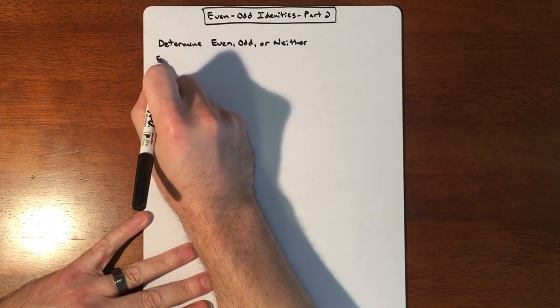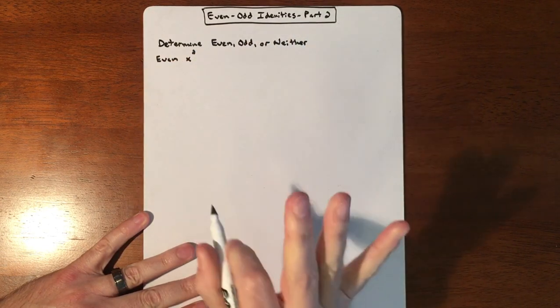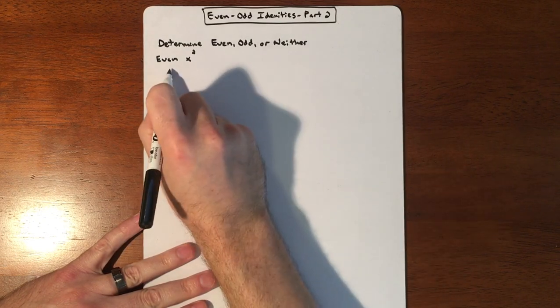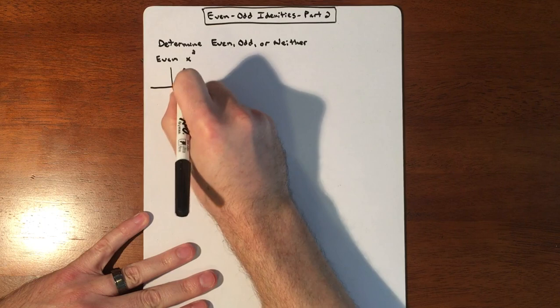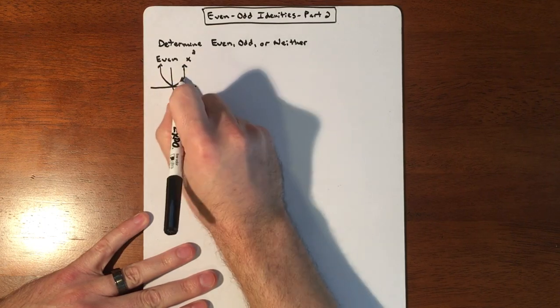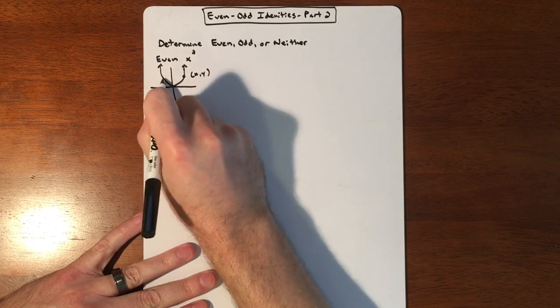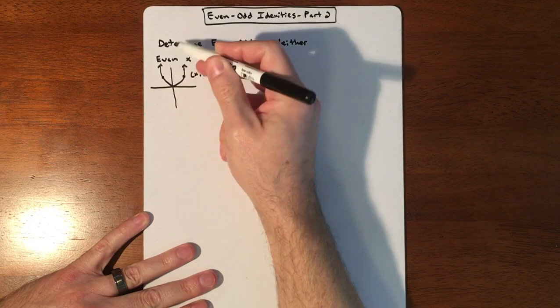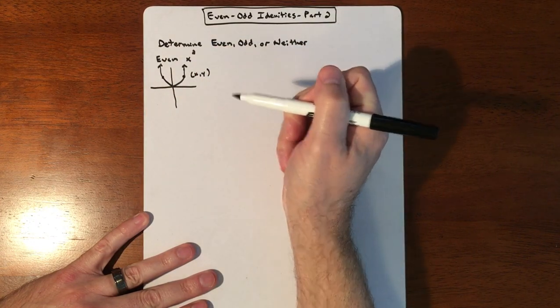So if you have yourself an even function, the most basic one that I think of is just a basic x squared centered around the origin. So with that, you have some sort of a problem, and for every x, y coordinate you have, you also have a reflected point. An even is going to be reflected along the y axis.